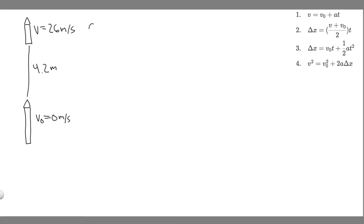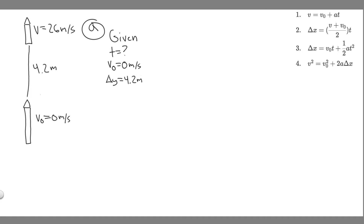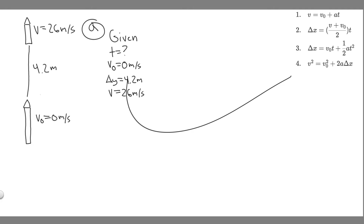Let's go ahead and start with A. For A, what we're trying to do is find how much time it takes for the rocket to reach its height — basically, how long it takes the rocket to travel 4.2 meters. We always want to write down the givens first. We're trying to find T, so T equals question mark. We know the initial velocity V₀ is 0 meters per second, because the rocket starts at rest. The change in position, delta Y, equals 4.2 meters. And we also know the final velocity V is 26 meters per second.